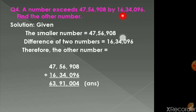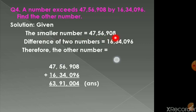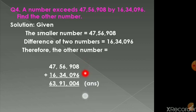By how much is it smaller? By 16,34,096 — that means this is our difference. The statement: the smaller number is 47,56,908 and the difference of the two numbers is 16,34,096. Therefore, the other number is more than 47,56,908, so we add the two numbers. The answer is 63,91,004.